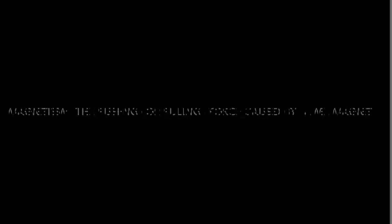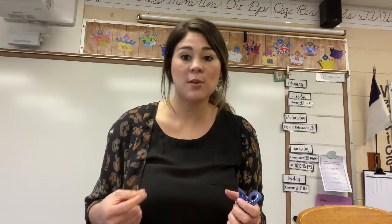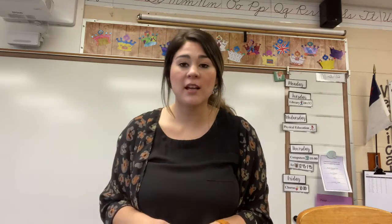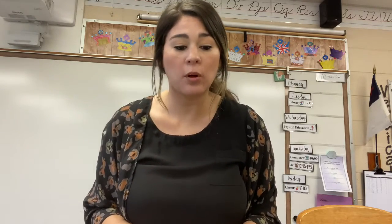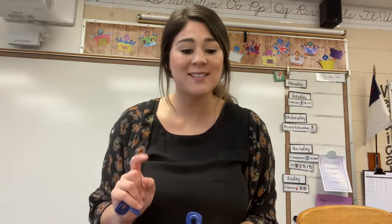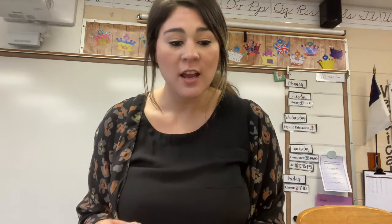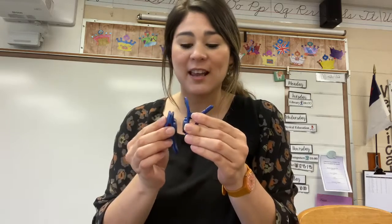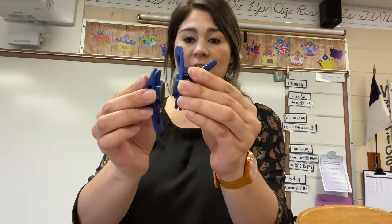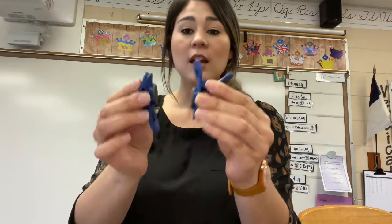Magnetism is the pushing or pulling force caused by a magnet. The ends of a magnet are called poles. Every magnet has a north pole and a south pole. If you put two magnets near each other, the opposite poles attract. I'm trying to put these two magnets together and they're not attracting — meaning they're not coming together — so that means they are probably the same pole.